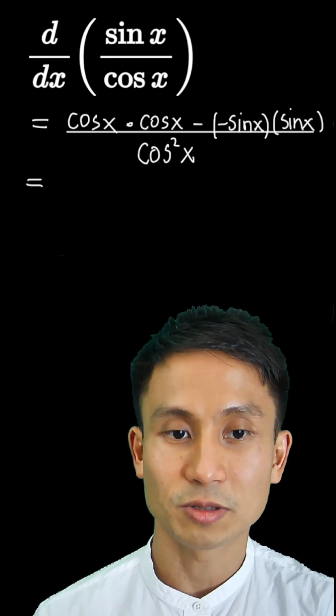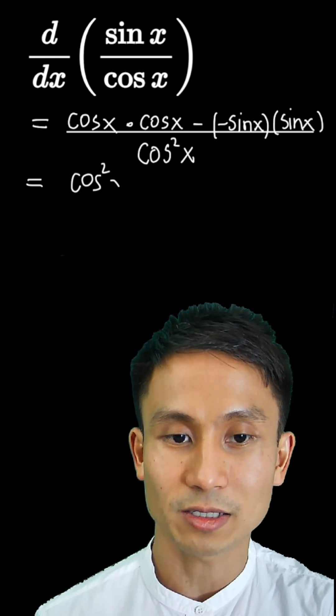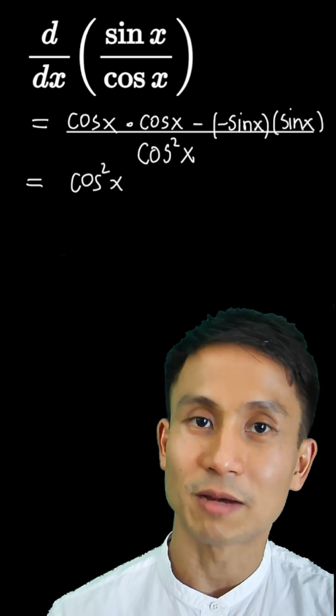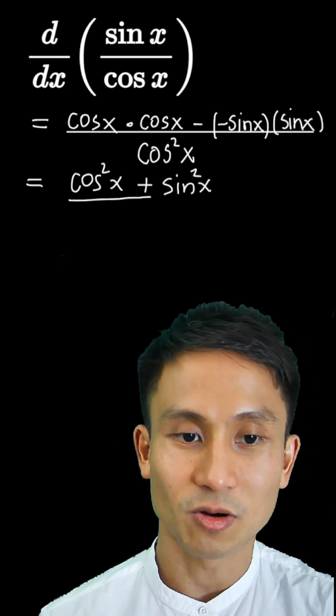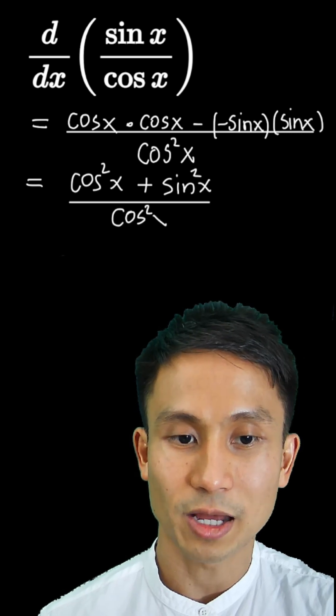Simplifying the top bit, cos times cos we get cos squared x. Minus times minus here becomes a plus, sine times sine we have plus sine squared x, again all divided by cos squared x.